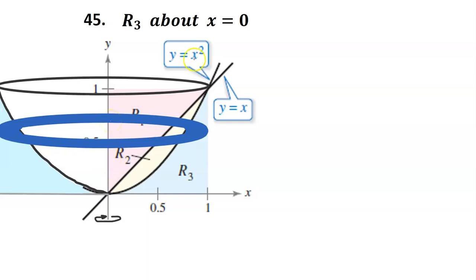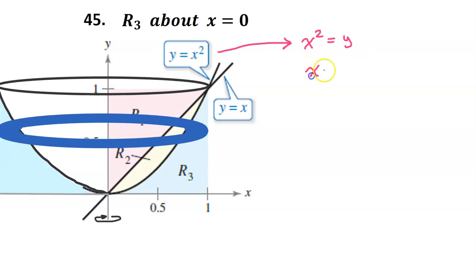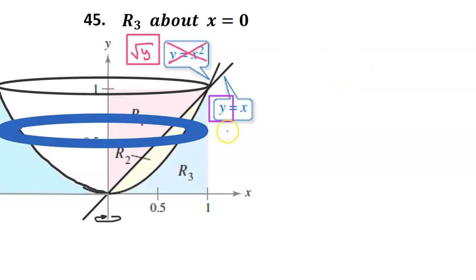For that reason, we need to rewrite the functions in terms of y. To rewrite the parabola in terms of y, we need to solve for x. Let's take the square root of both sides, and we get x is equal to the square root of y. We are going to stick to the first quadrant, so this is fine. We do not need to rewrite the equation y equals x. When this function shows up in our calculations, we will simply use y.